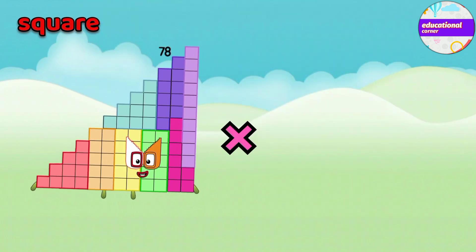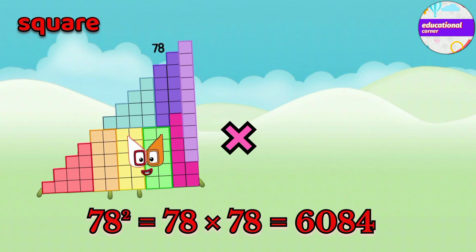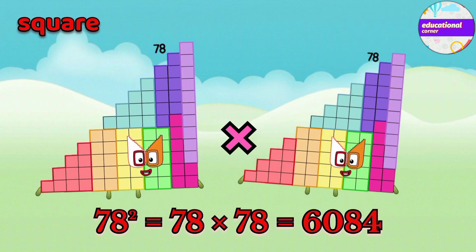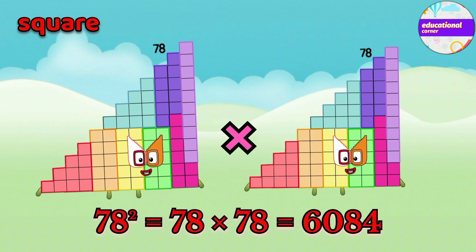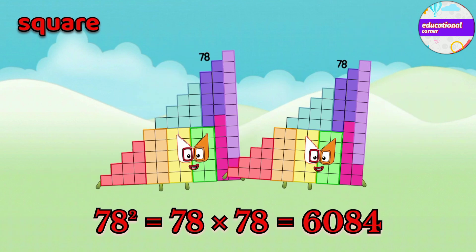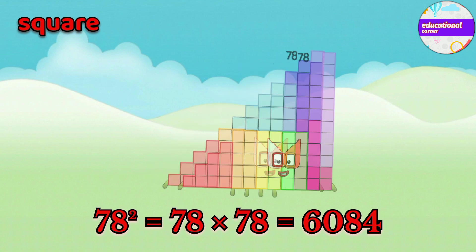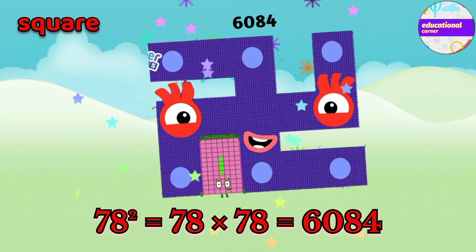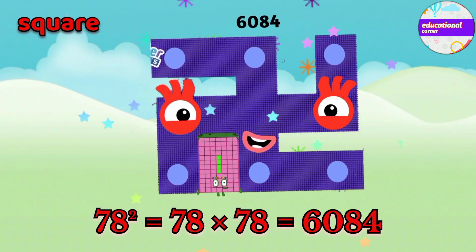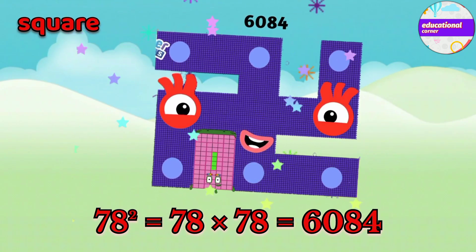78 multiply by 78. The square of 78 is 6084.